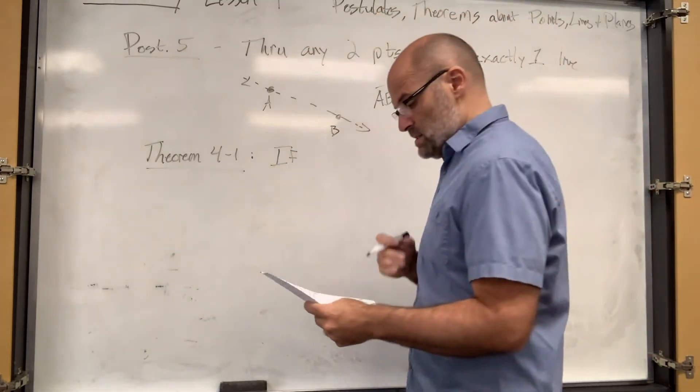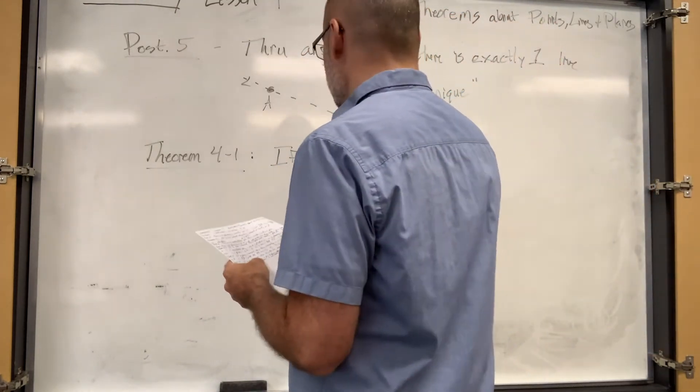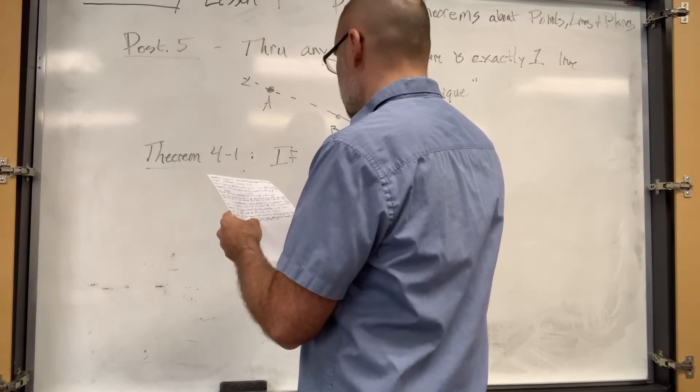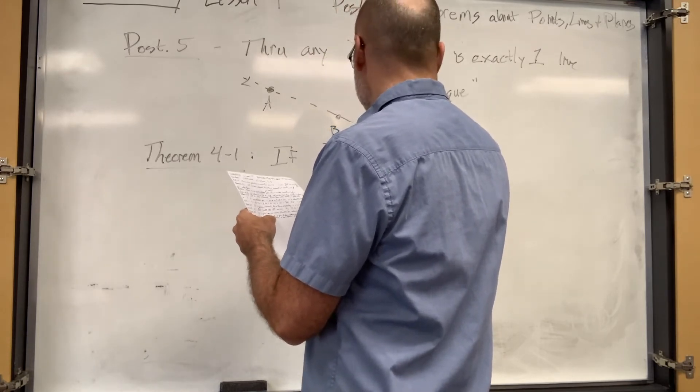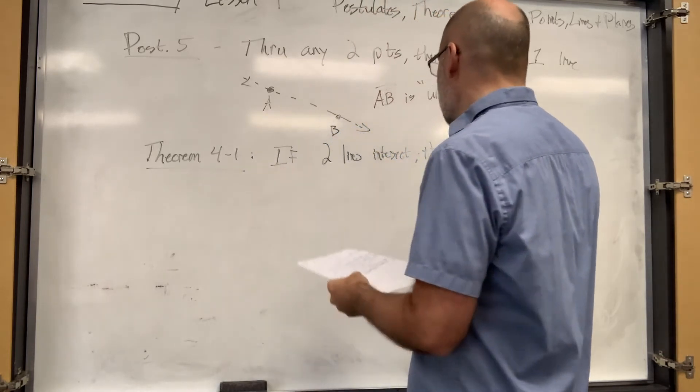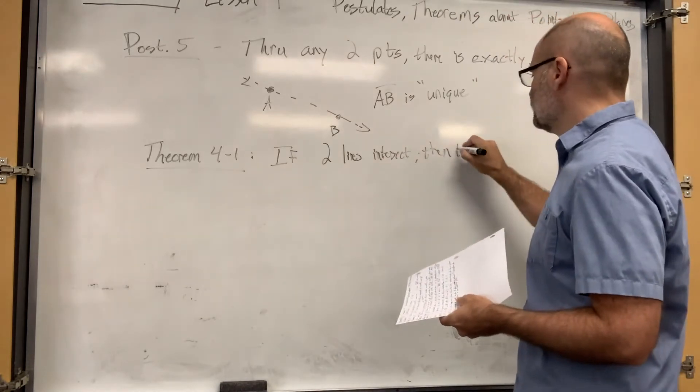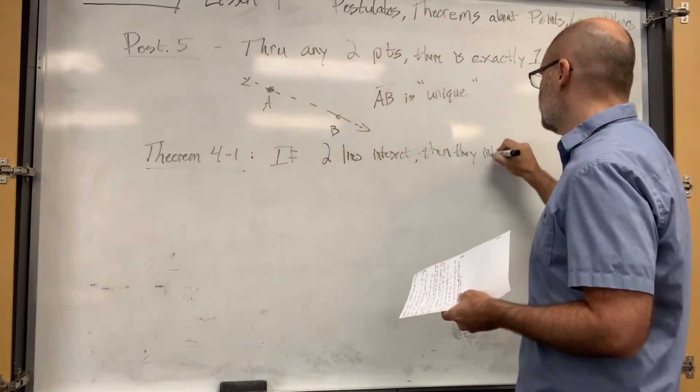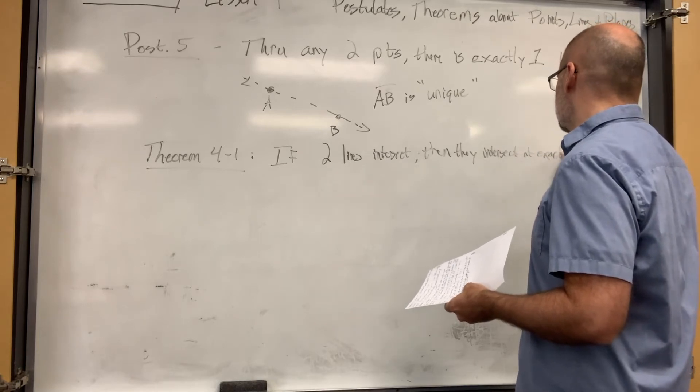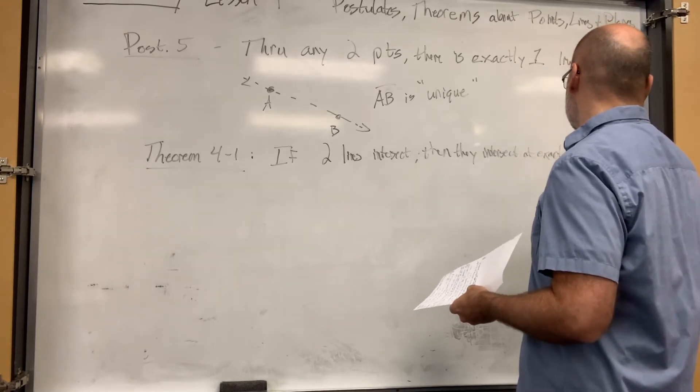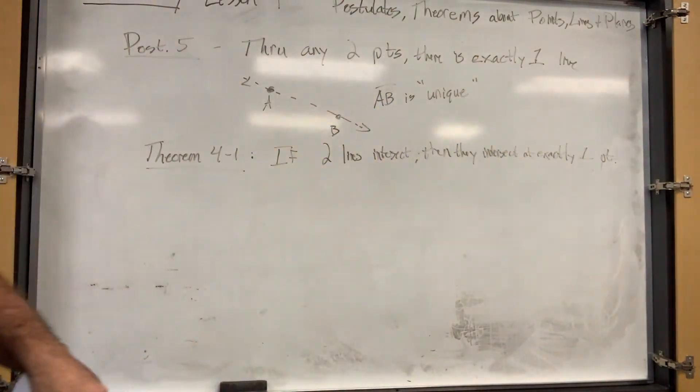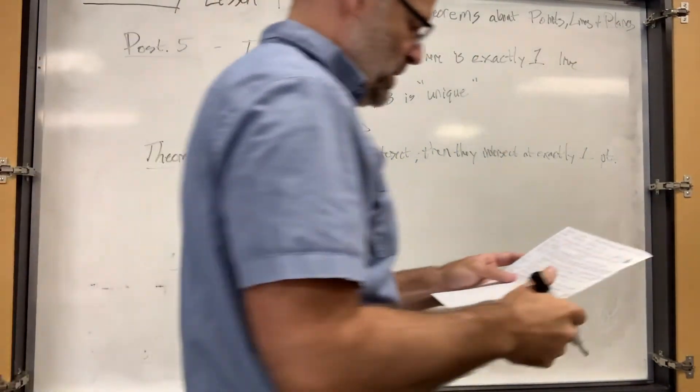Here's what the theorem says: if two lines intersect, then they intersect at only one, exactly one point. We already talked about this. Two lines intersect, they're never going to come around and intersect again. It's just one point.